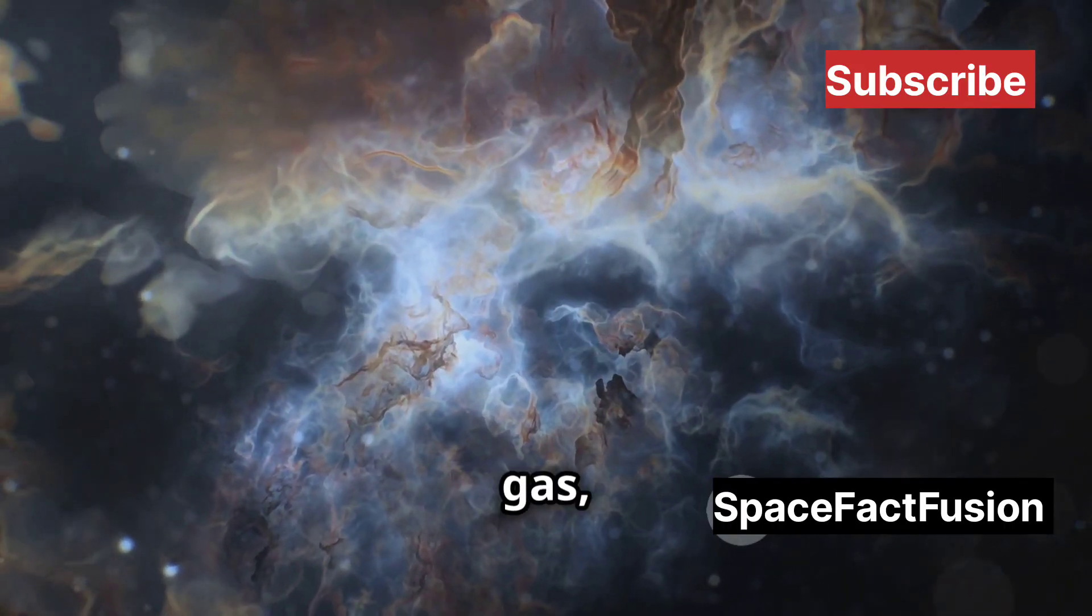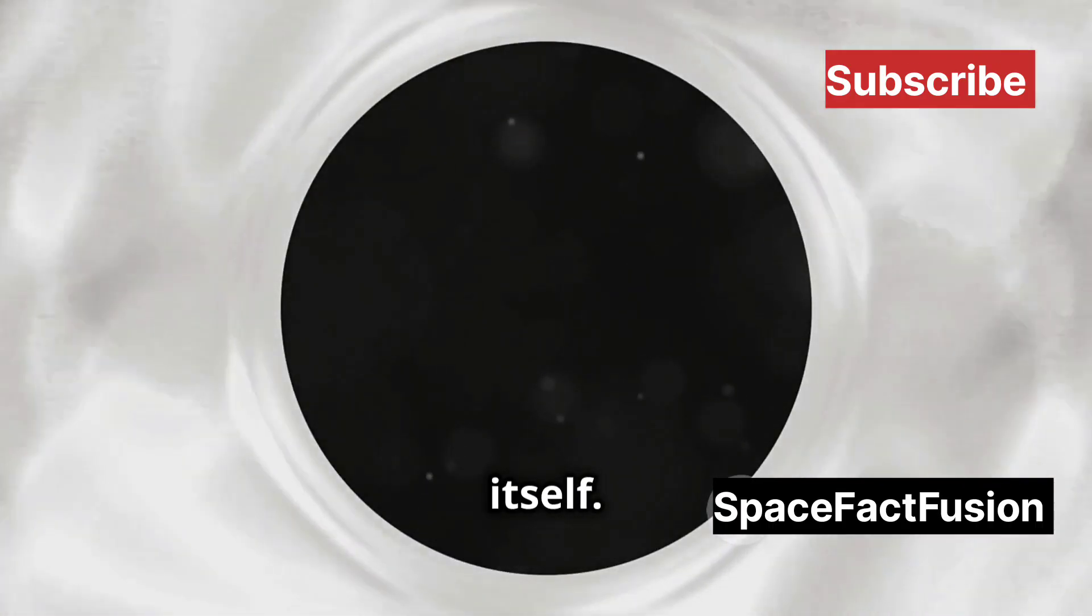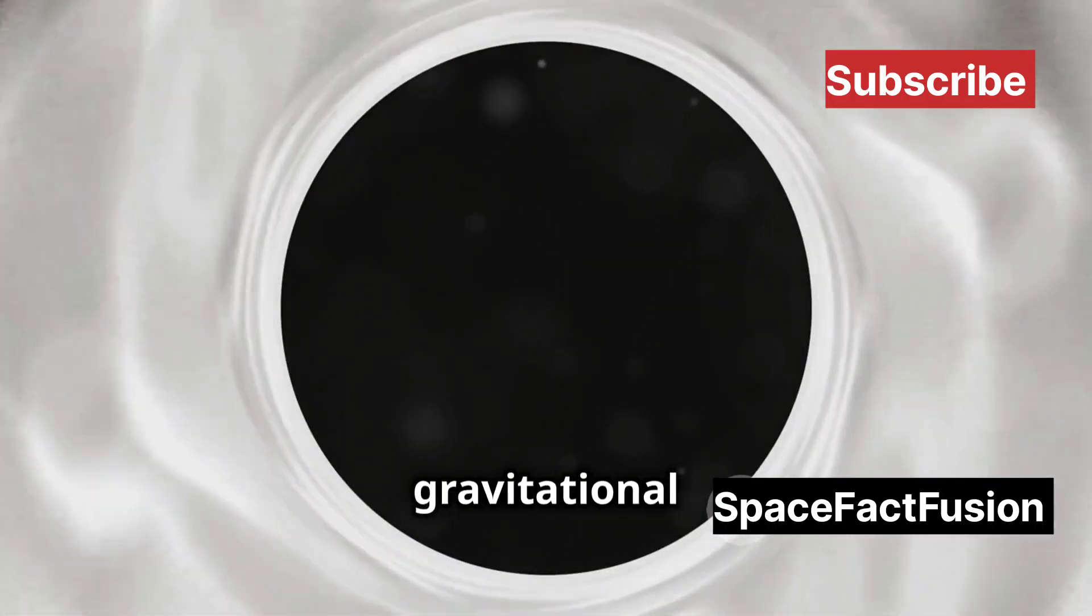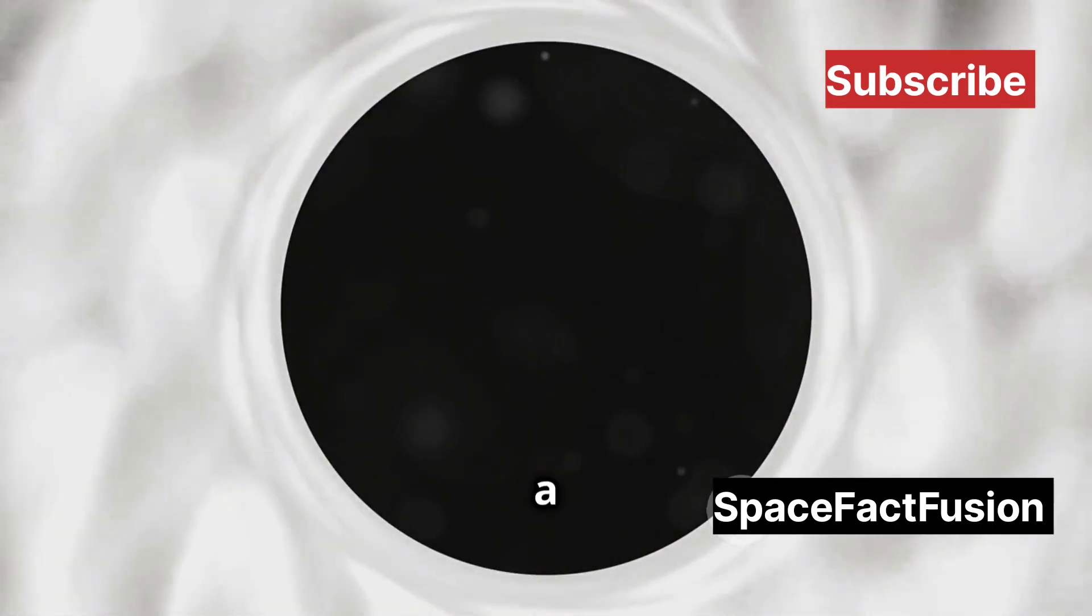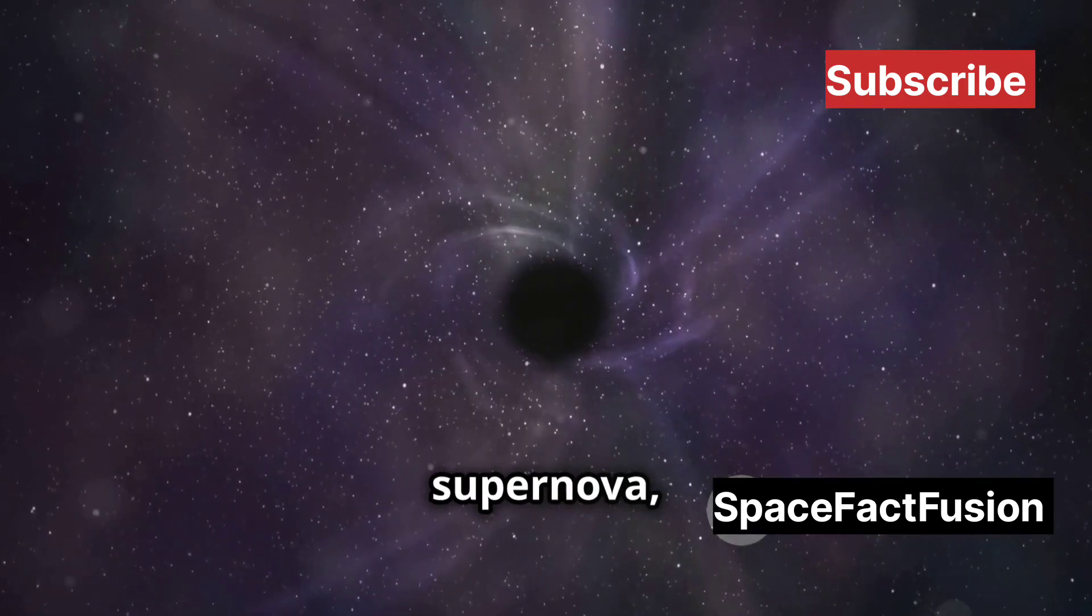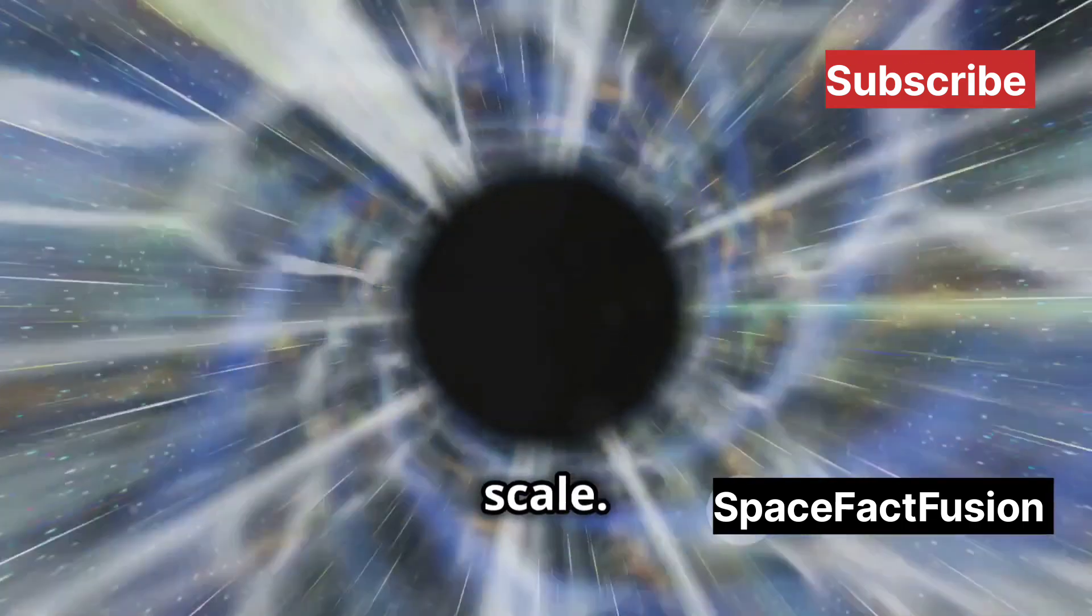Imagine a cloud of gas, a million times the mass of the sun, collapsing in on itself. The sheer mass and gravitational pull would be enough to overcome any internal pressure, leading to a direct collapse. No supernova, no stellar remnants, just pure gravitational collapse on an epic scale.